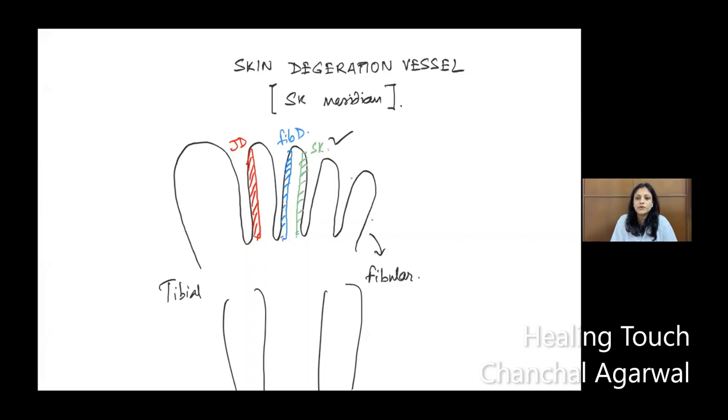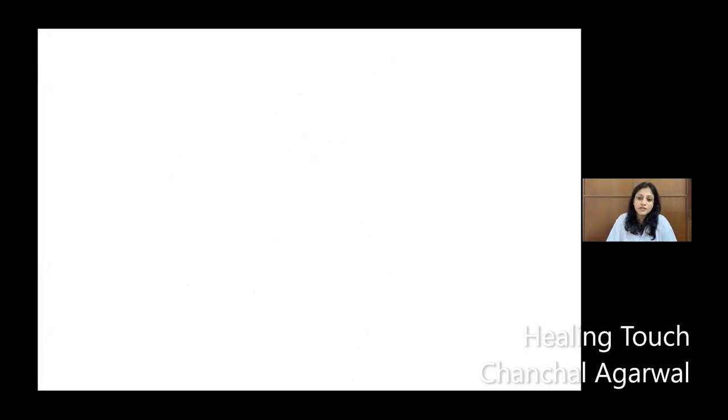Before going into the detail of each point, let us first understand what skin is. We have known skin as part of the five sense organs since childhood — eyes, nose, ear, tongue, and skin. Skin is always known as the largest organ of the body, which covers the whole body. But a little detail is missing beyond it being the largest organ and one of the sense organs.